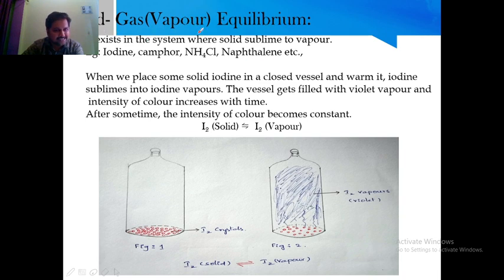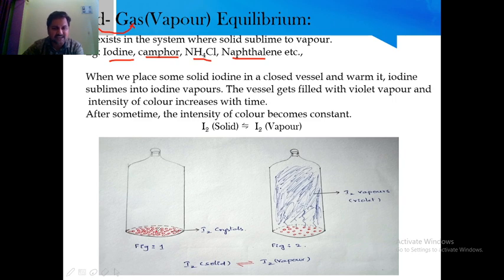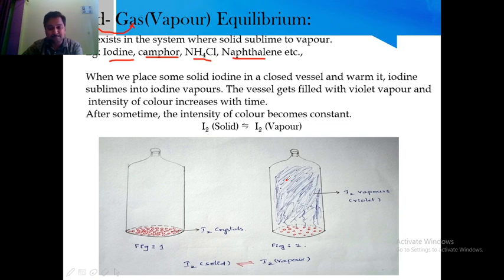The third type is solid-gas equilibrium, observed only in sublimable compounds. Sublimation is the conversion of solid to gas without passing through a liquid state. Examples of sublimable compounds include iodine, camphor, ammonium chloride, and naphthalene — they directly turn into vapor. In a closed vessel containing iodine crystals, when heated to a small temperature, iodine turns into violet vapors directly. When maintained at constant temperature, both iodine solid and iodine vapor are observed in equilibrium.